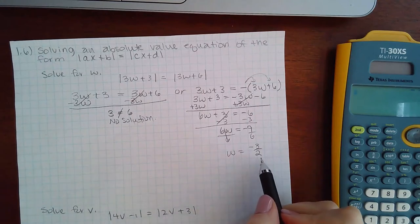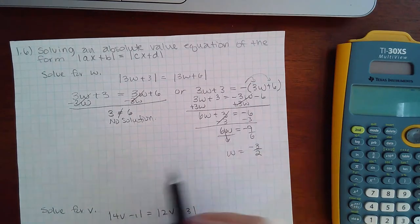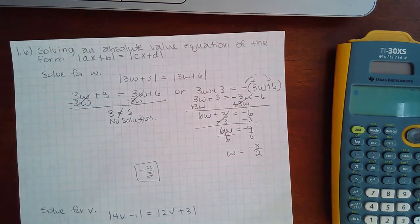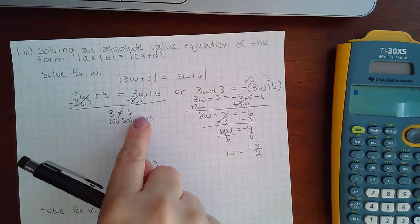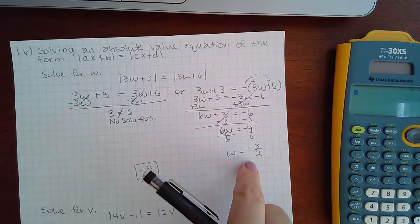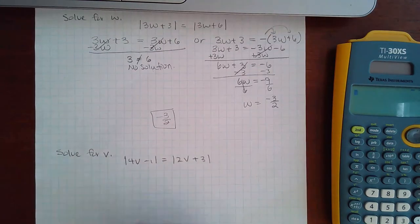So w equals negative 3 halves if I reduce that fraction. So I do get an answer for this side. That just means I'm only going to have one final answer and it's negative 3 halves. The total complete conclusion is not no solution. You could have had two answers, but because this side didn't have an answer, you only have the one solution.